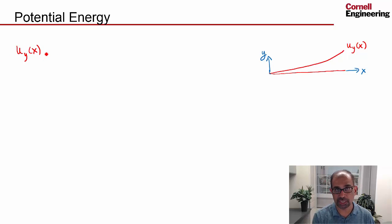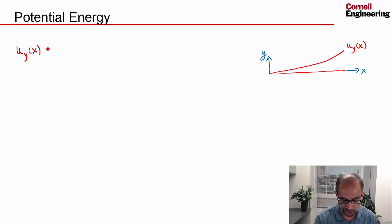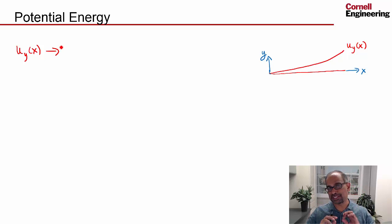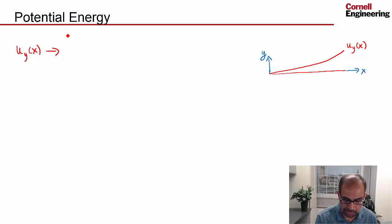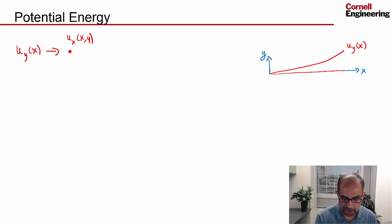Once I know what the midline or the neutral axis is doing, we saw that we can determine the displacement at any point in the beam. So, if you go to any point in the beam, we can determine how much it's going to move in the x direction and how much it's going to move in the y direction.